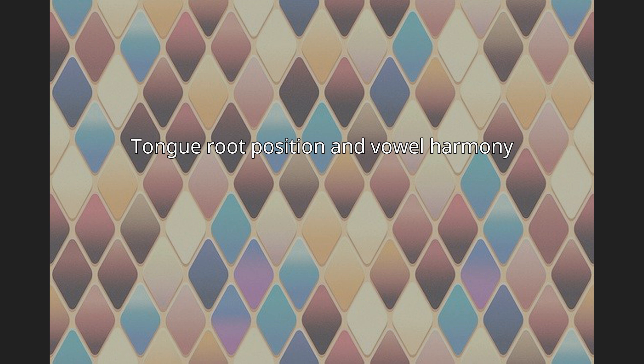All minus ATR vowels become plus ATR when followed by a peripheral plus ATR vowel /i, a, u/. That is, orthographic E, E, O become I, E, O, U before /i, u/ and sometimes before /a/, as long as it does not conflict with the previous rule. The plus ATR mid vowels /e, o/ become minus ATR high vowels /i, a, u/ when preceded by a minus ATR non-high vowel /e, o/.